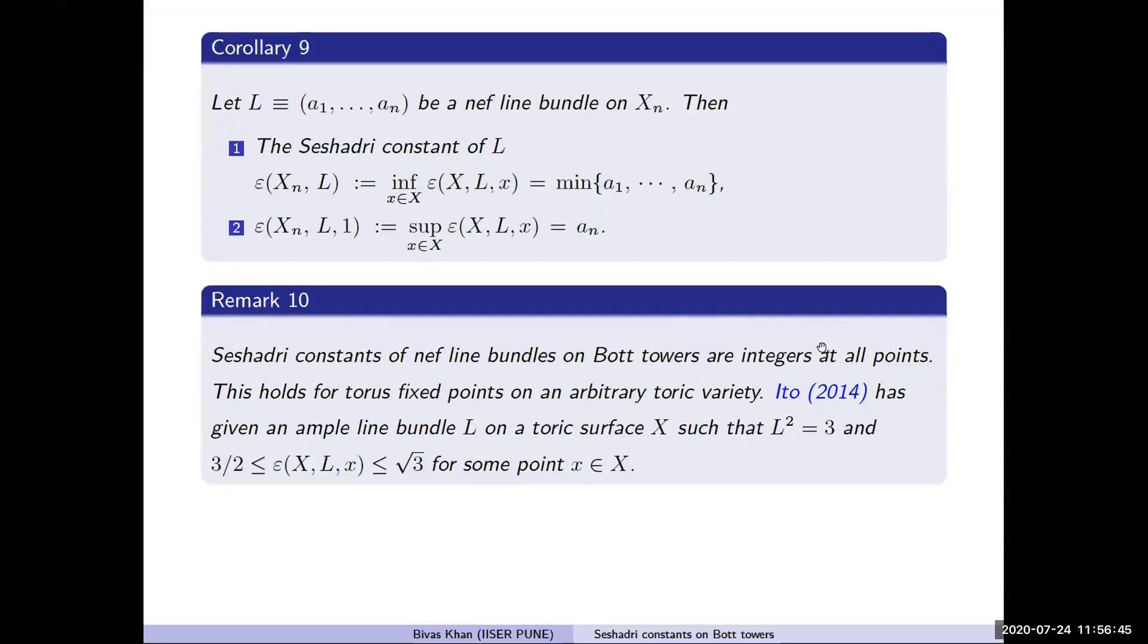Let's move to the next corollary, which says we can compute the Seshadri constant of the line bundle, which is denoted as epsilon(X_n, L), which is taken as infimum of all epsilon(X, L, x). It is just the minimum of these coefficients a_i. Similarly, we can compute the supremum, which is just a_n.